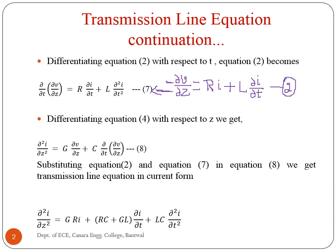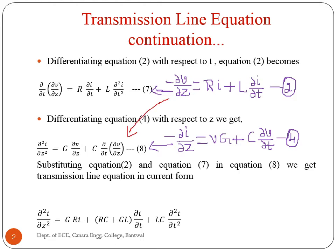Similarly, differentiate equation four with respect to Z to get equation eight. Equation four is: ∂i/∂z = G·v + C·∂v/∂t, derived by applying KCL to the transmission line circuit. Now substitute equations two and seven into equation eight to get the transmission line equation in current form.